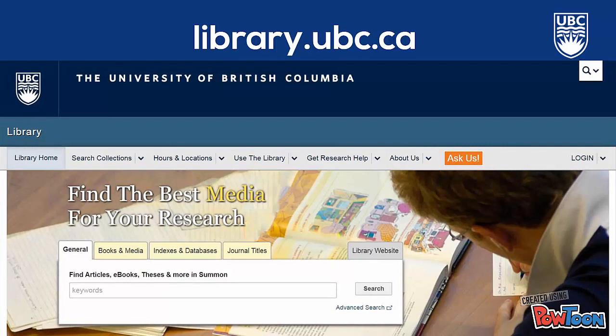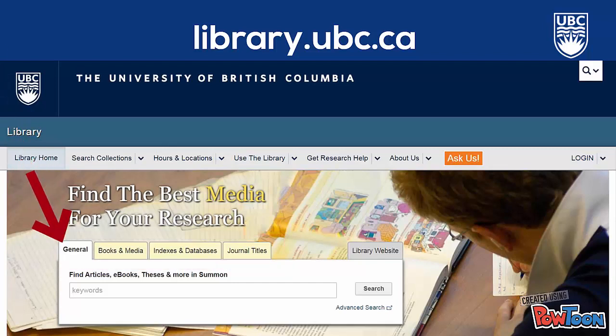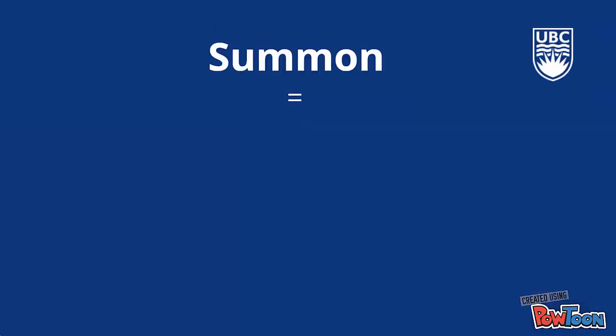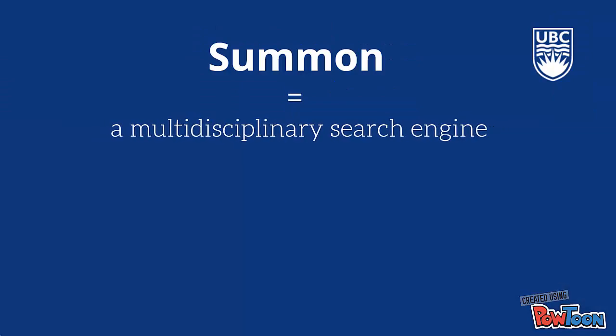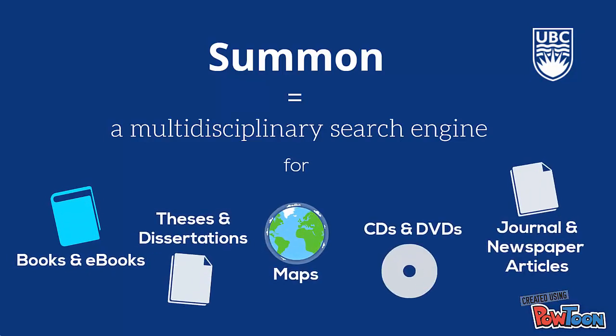We'll start on the UBC Library homepage where you'll see four search tabs available for you to use. First you'll see the General tab. This tab uses Summon, UBC Library's most comprehensive search engine. Summon works a lot like Google and it allows you to search the UBC Library for resources in any discipline and in all available formats.